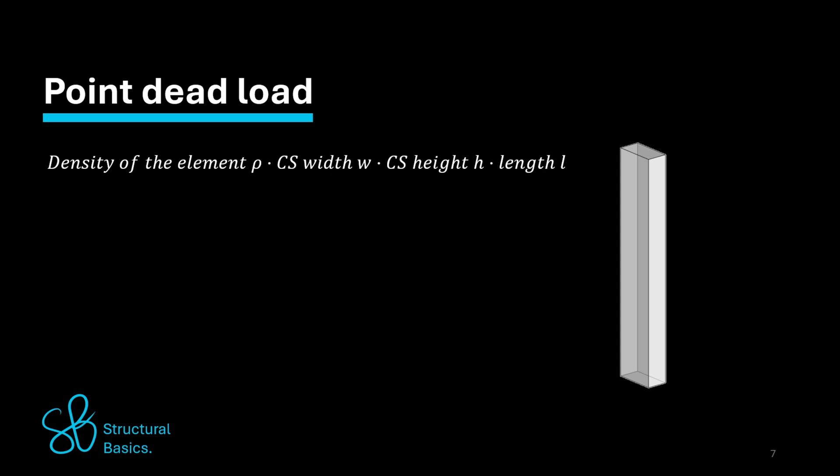So the point dead load of a wooden glulam column with a density of 420 kg per cubic meter, cross-section width of 30 centimeters, a cross-section height of 50 centimeters,